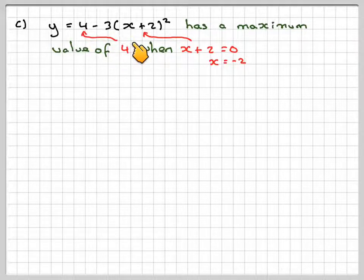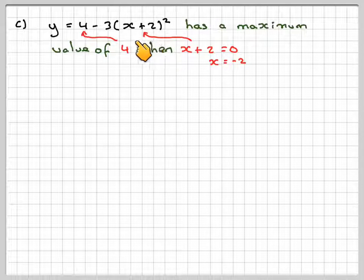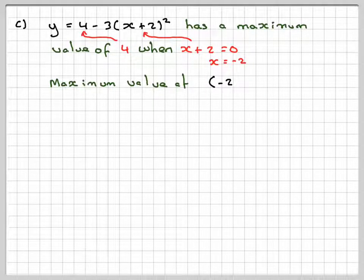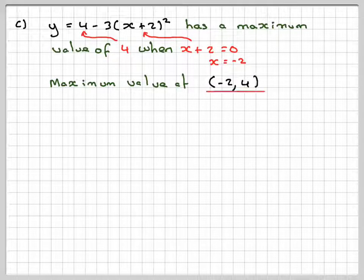Any other value, -1, -1 + 2 gives me 1, 1² is 1, we're going to have 4 - 3, which is less than 4. So the maximum value of this function can ever be is 4, when x is -2. So the coordinates of the maximum point are going to be x = -2, y = 4.